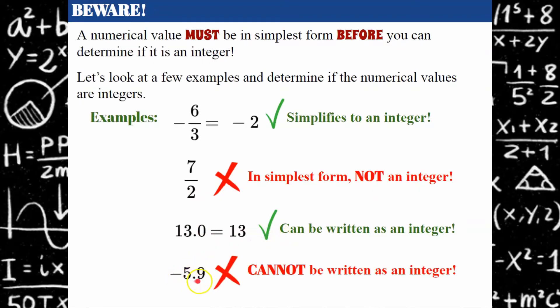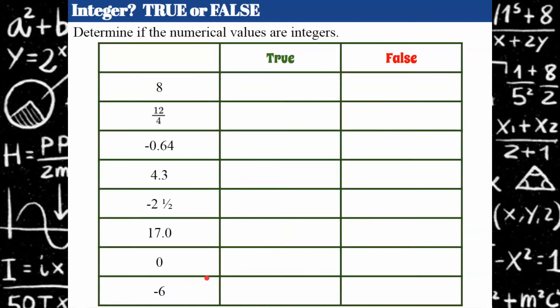And negative five point nine cannot be written any different way — you could write it as a fraction, but you cannot write it as an integer. So your turn. I'm going to ask you to pause the video, look at these values, and mark whether or not you think they're true or false. Come back and hit play when you're ready to check your work.